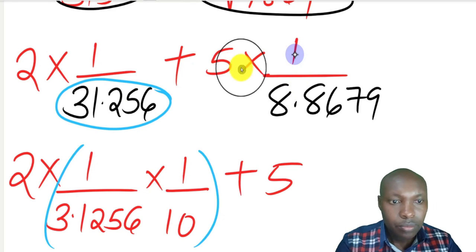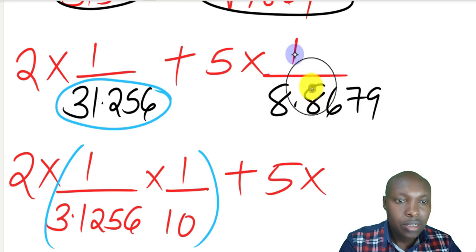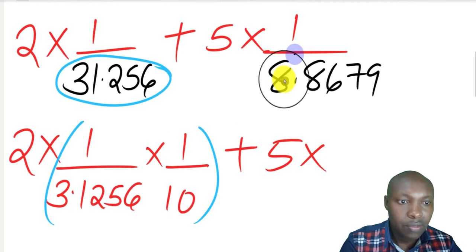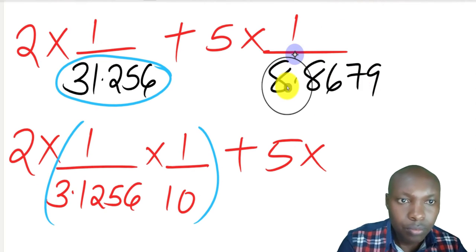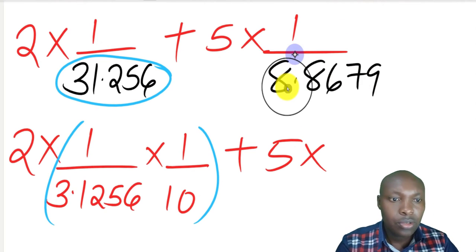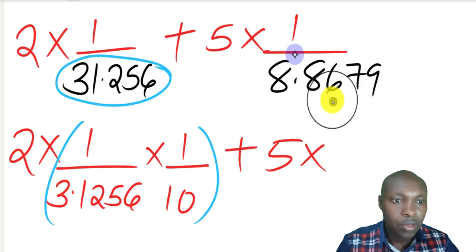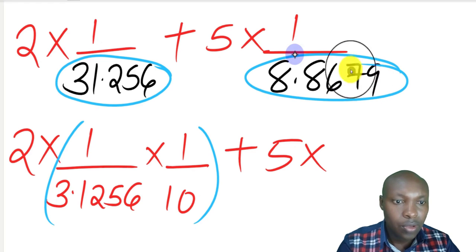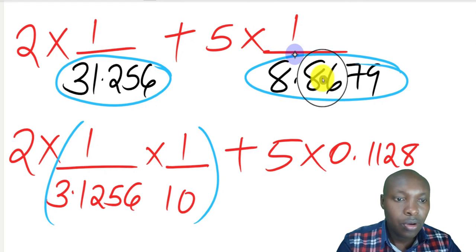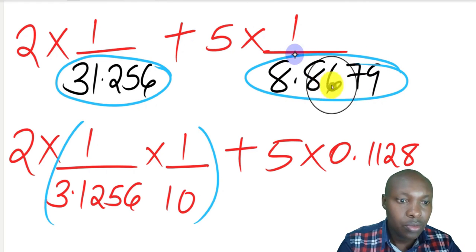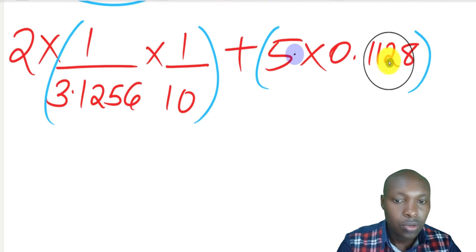The other part is 5 multiplied by... now we can get the reciprocal of 8.8679 directly from the table. But when you're getting the reciprocal, we need to get the reciprocal up to 4 significant figures. So we get the reciprocal of 8.868, since that is the limit. When you do that, we get 0.1128.